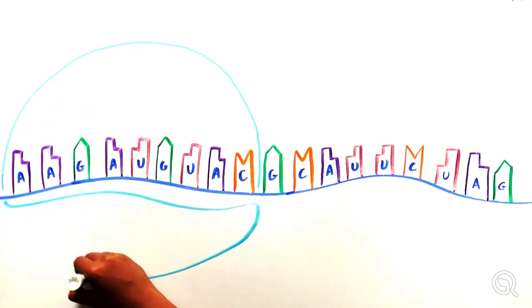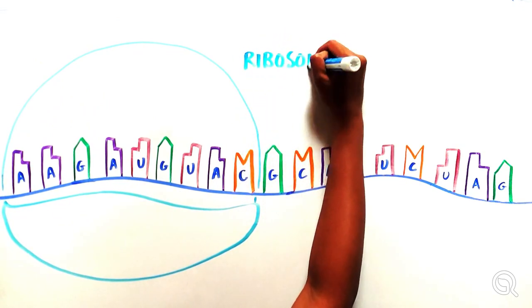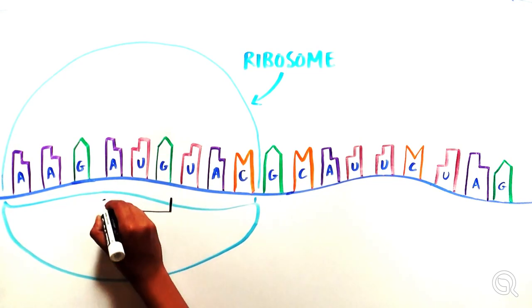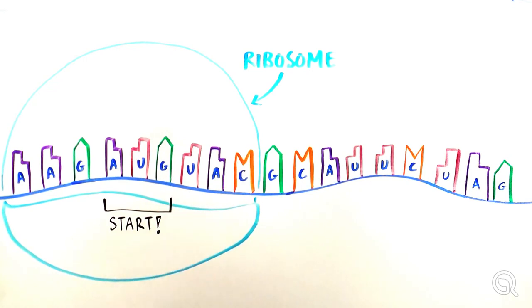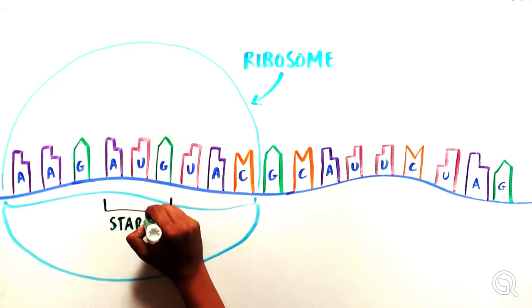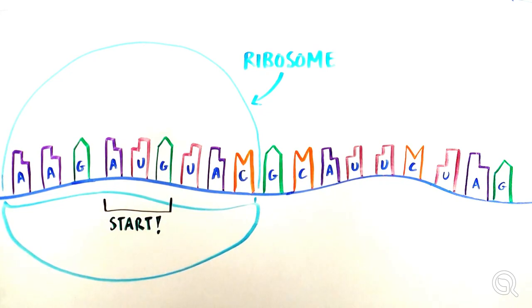The actual process of translation occurs through the action of a huge protein-RNA complex called the ribosome, which reads codons one by one and incorporates the appropriate amino acid. At the beginning of every mRNA is a start codon formed by the bases AUG, which codes for the amino acid methionine and tells the ribosome where to start translating.